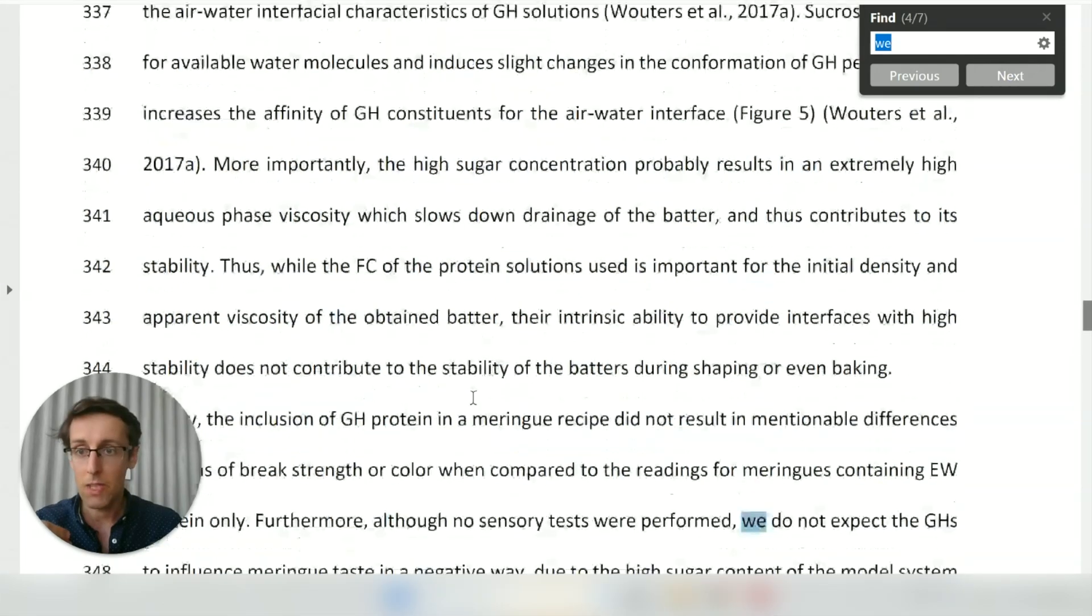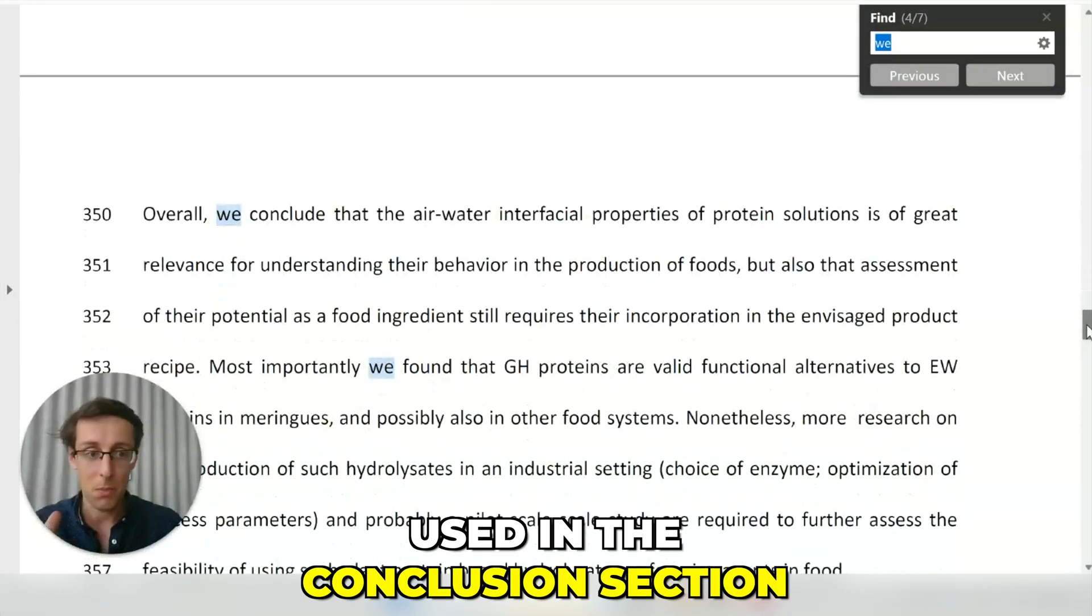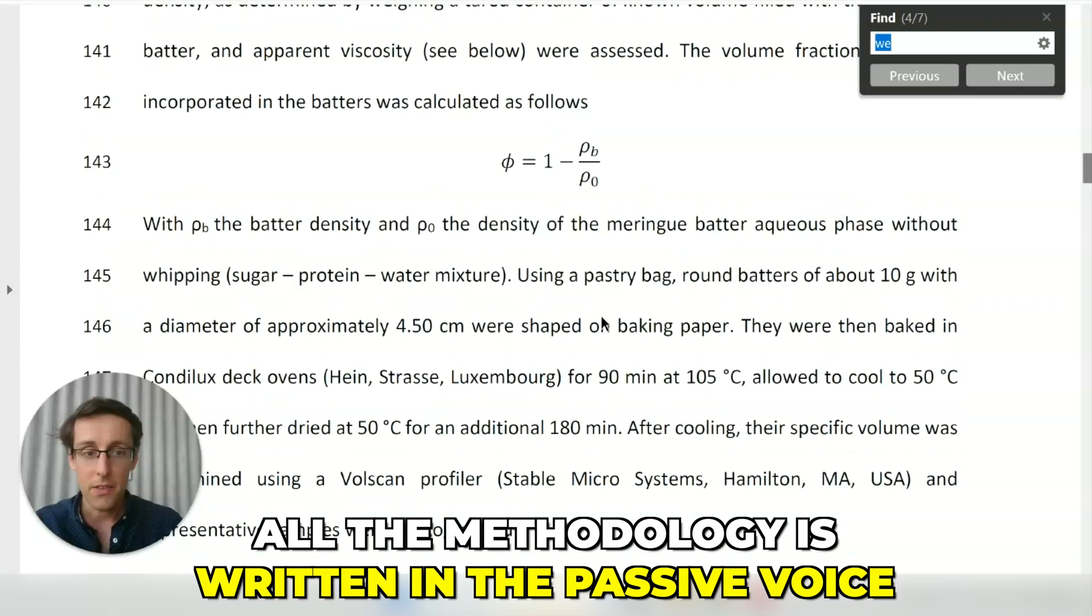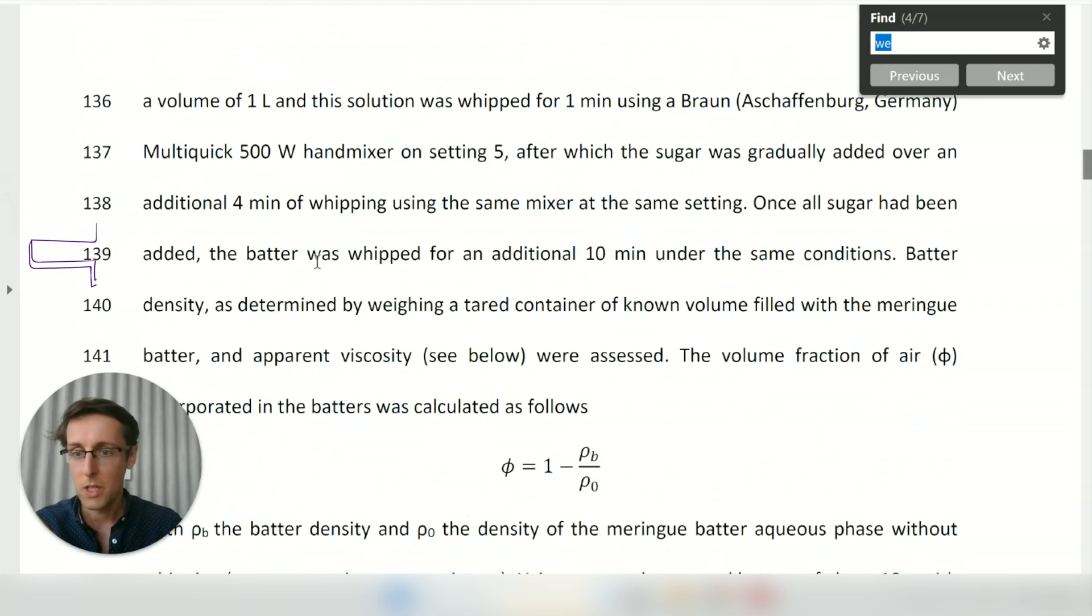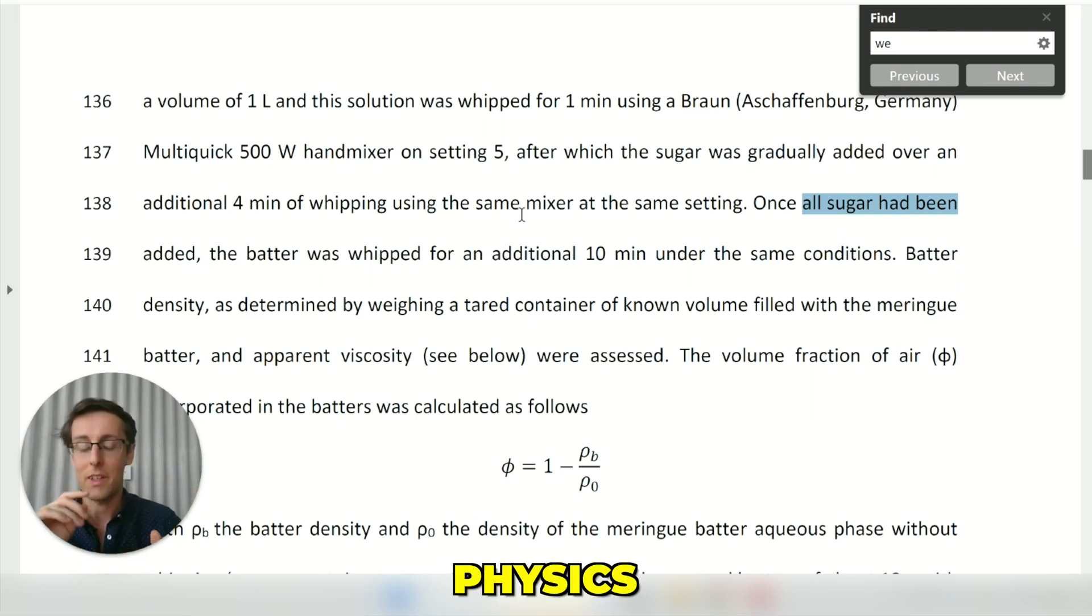If we search for the next we, it's way down in the paper here where the writer already presents the conclusion. So it's used here in the conclusion section but not in the methodology. If we scroll up, I want you to see the methodology section. You can see all the methodology here is written in the passive voice. For example, the batter was whipped—the writer doesn't say we whipped the batter. Same here, all sugar had been added, not once we had added all the sugar. This is an example of a very quantitative field where we is almost never used. So if you're in that sort of quantitative field—let's say physics, medicine, food sciences, and things like that—you will want to avoid we as much as possible, especially in the methodology section. You might use it to state your aim, maybe once or twice in the conclusion, but that's about it.